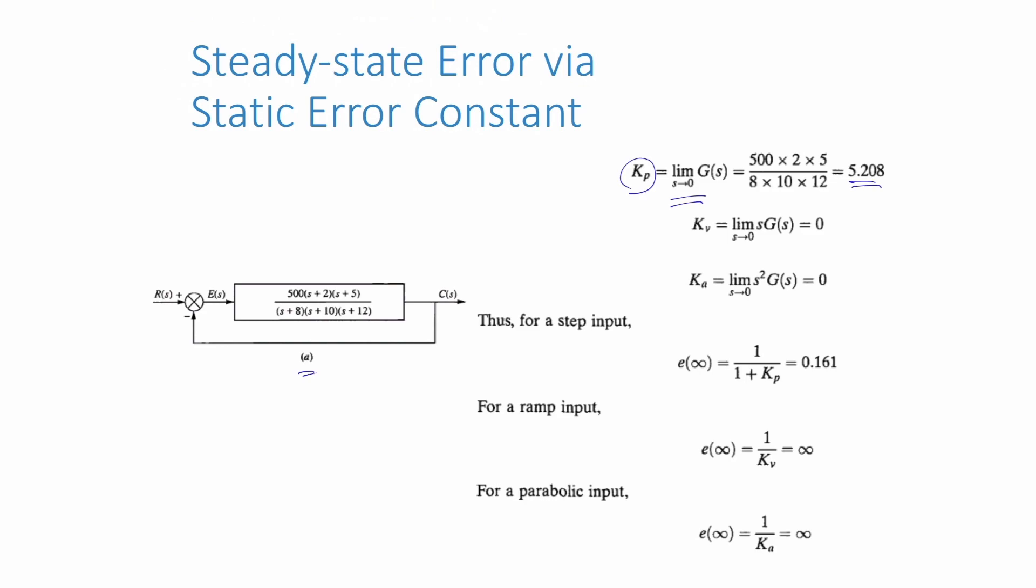And then once we find the value of Kp, Kv and Ka, we can input it in the steady state error equation which is for the step input is 1 over 1 plus Kp, for the ramp input is 1 over Kv, and steady state error for the parabolic input is 1 over Ka.